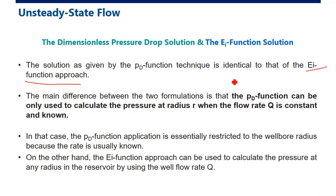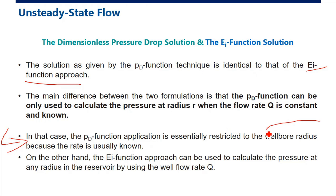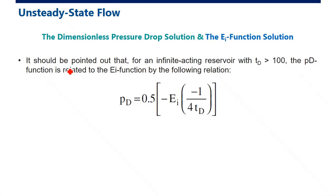The dimensionless pressure function approach is essentially identical to the exponential integral function approach. The main difference is that when Q is constant and known, the PD function is restricted to the wellbore radius — because we know the flow rate and can maintain it constant. The Ei function approach can calculate pressure at any radius in the reservoir. For an infinite acting reservoir, when TD is greater than zero, the PD function is related to the Ei function. The arrival of the pressure disturbance at the drainage boundary marks the end of transient flow and the beginning of pseudo-steady state. Between these two flow states there is a late transient state — but due to its complexity and short duration, it is not used in practical well test analysis.